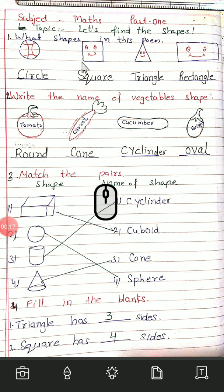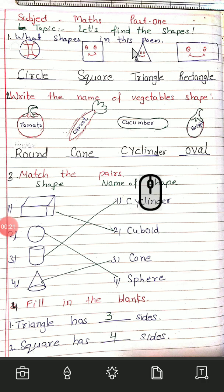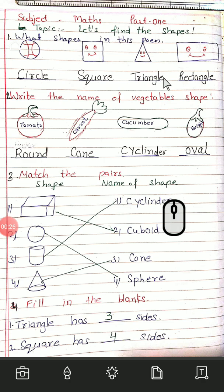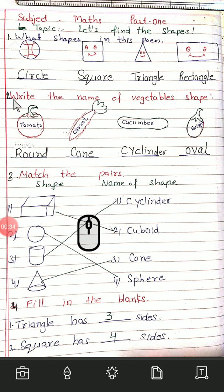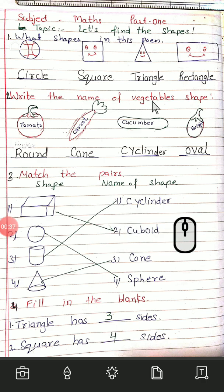Square. S-Q-U-A-R-E. Square. Triangle. T-R-I-A-N-G-L-E. Triangle. Rectangle. R-E-C-T-A-N-G-L-E. Rectangle. Second one: Write the name of the vegetable shape. First one — Tomato.